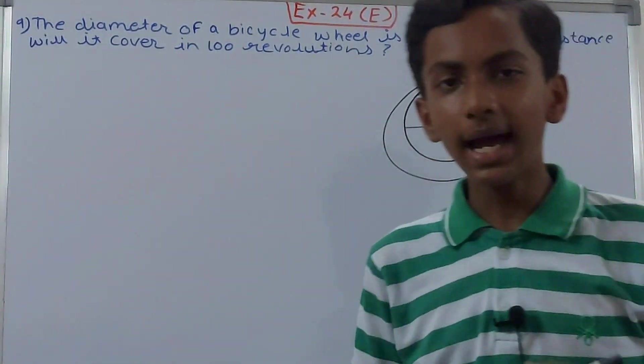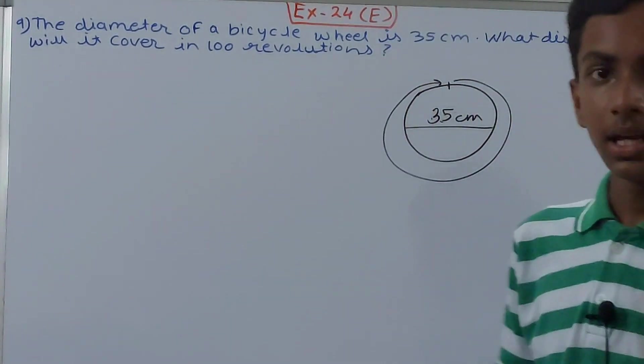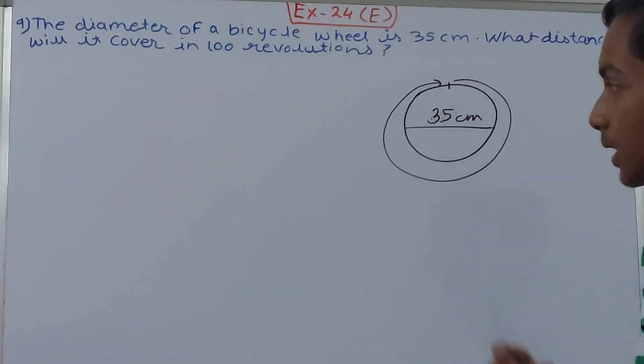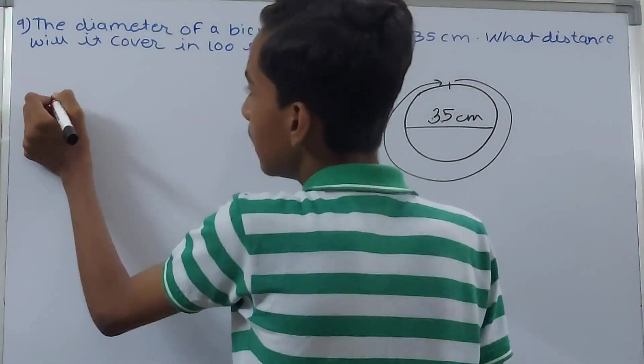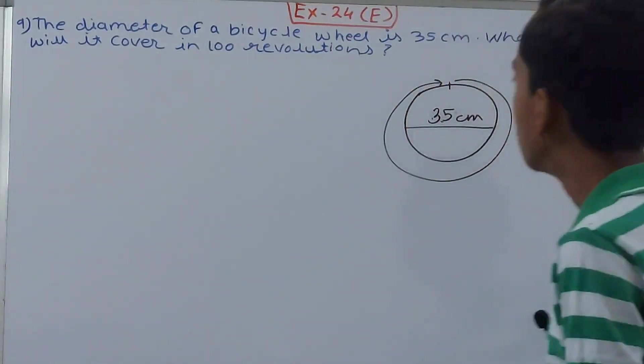is going, and the distance it covers in 100 revolutions is what we have to find out. So how are we going to find that? First, we need to know the boundary of the circle, that is, the circumference of the circle.